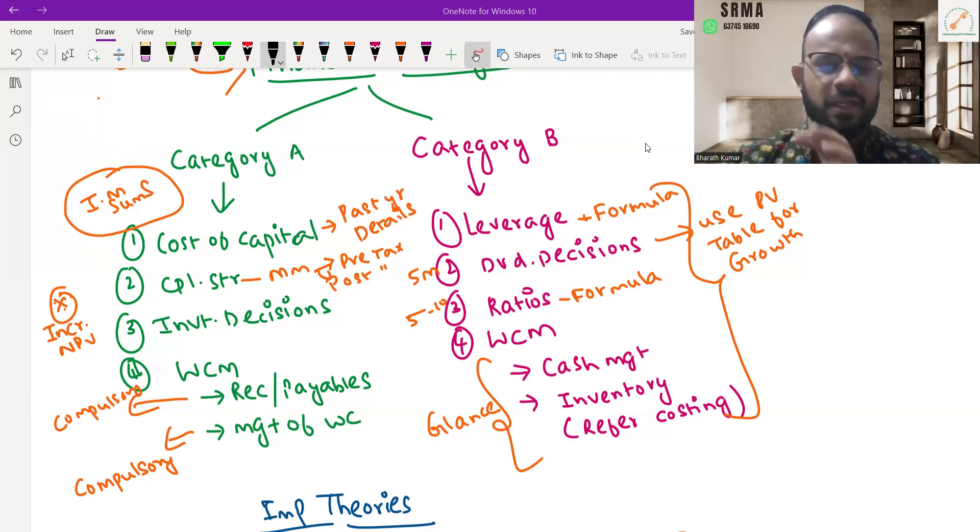For leverage, know all the formulas—it shouldn't take too much time. For dividend decisions, use the PV table for finding growth ratios and reverse calculations. The institute material's last sums are very tricky. I would suggest going from the back if you're doing last minute revision.